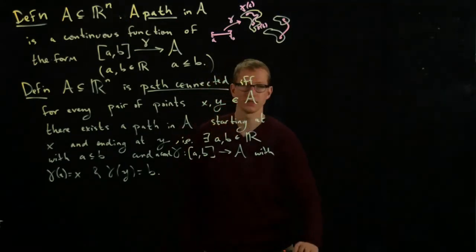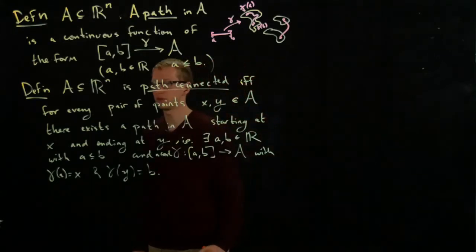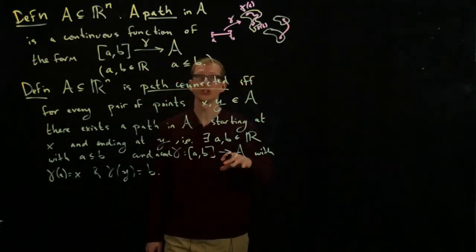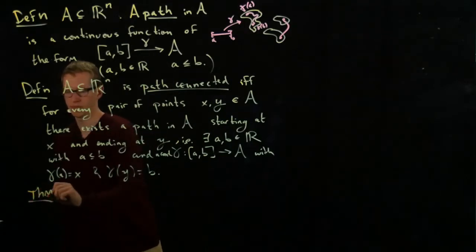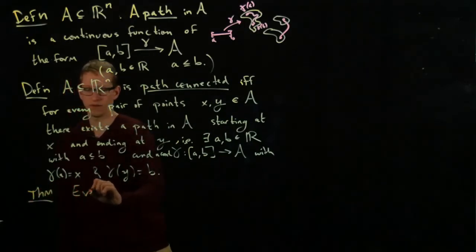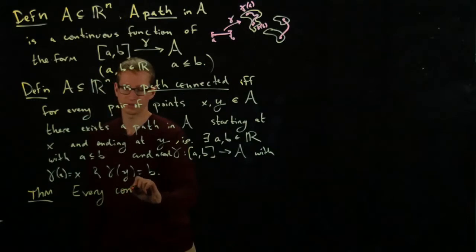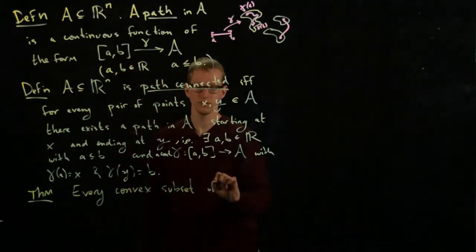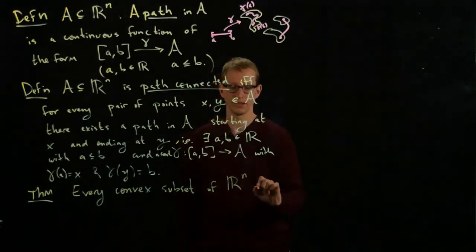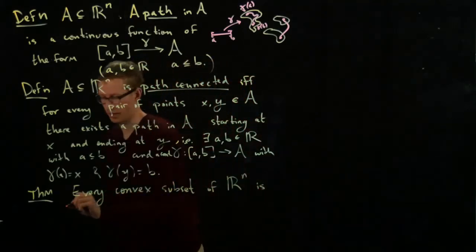We'll give explicit examples in a moment, and before we do that, let's talk about a more general class of examples. With the following theorem: every convex subset of Rn is, in fact, path connected.